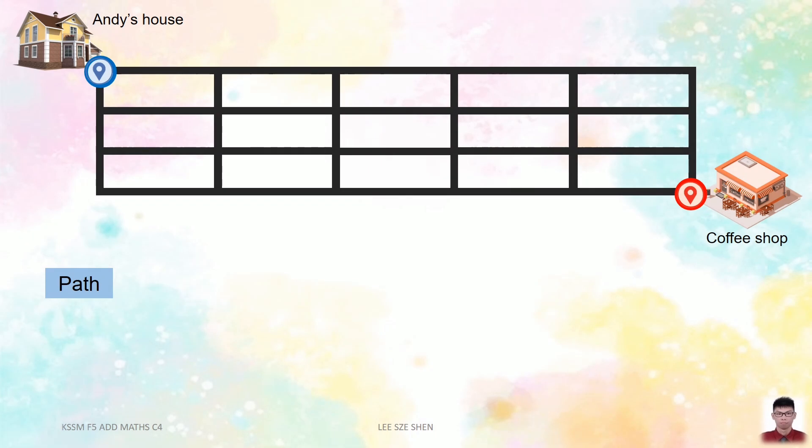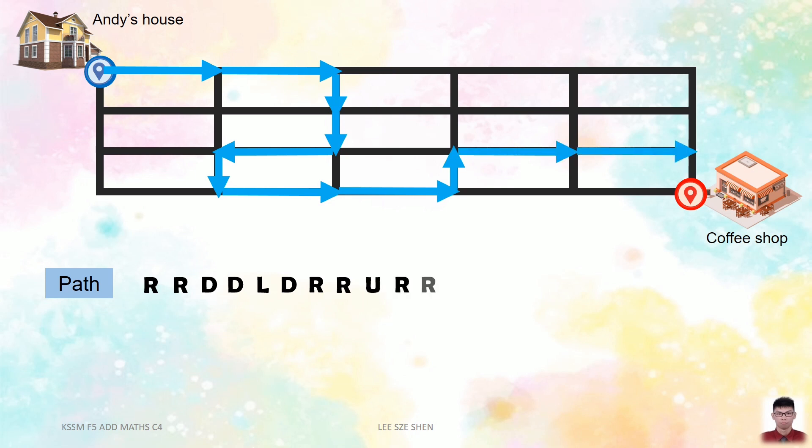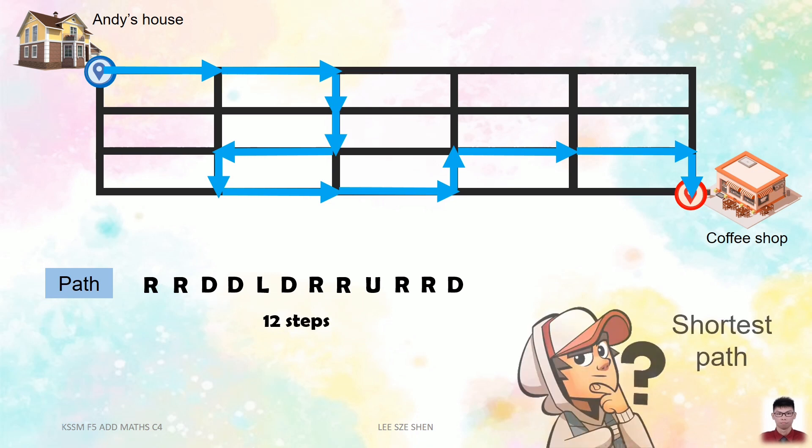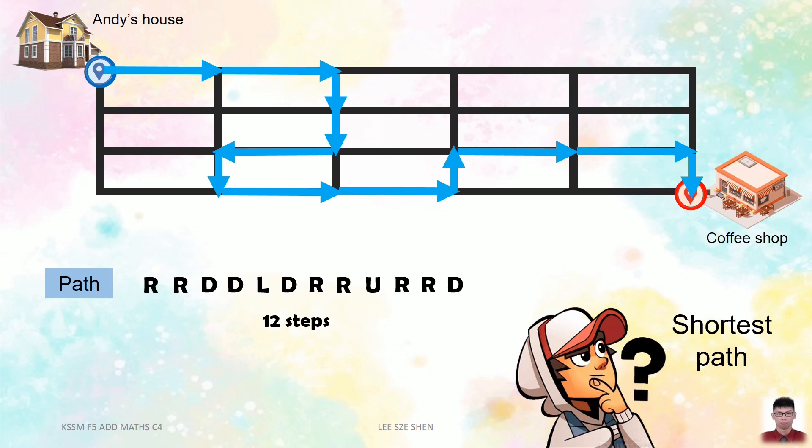Now, let's check why 8 steps will be the shortest. Let us try with this path. This path takes a total of 12 steps. Is this the shortest path? Clearly, it is not the shortest because previously we have already found there is a shorter path.